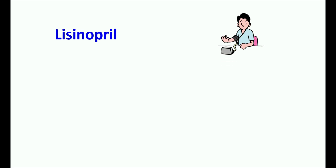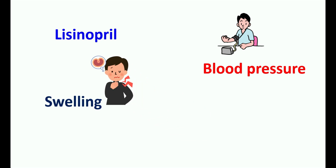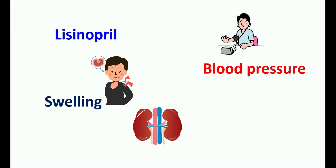Before starting lisinopril, you should know important facts like its effect on lowering of blood pressure, how much it can produce hypotension, and what other factors can increase the hypotensive effect of this medication. How lisinopril is linked with swelling and its complications, its effect on your kidneys, and how it affects your potassium levels — all these are essential to know. This video covers all important facts of lisinopril.